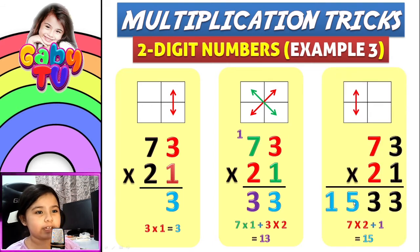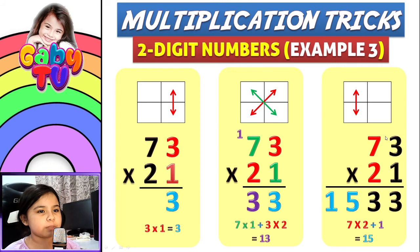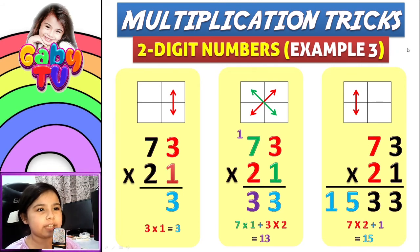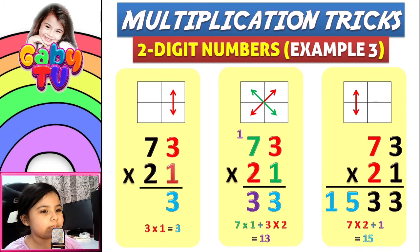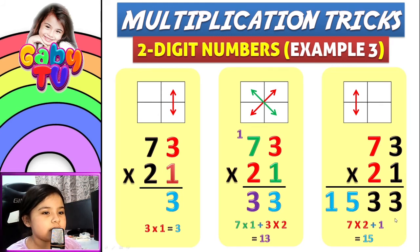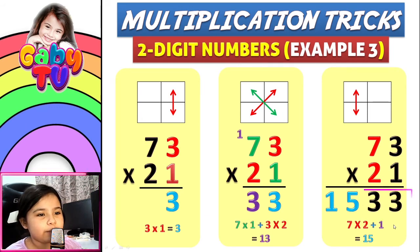Step three — the last part: multiply the red numbers but this time again it's from the left side. Seven times two plus one equals fifteen — the one is from here. So you put fifteen here. And what have you got? One thousand five hundred thirty-three. Easy, right?